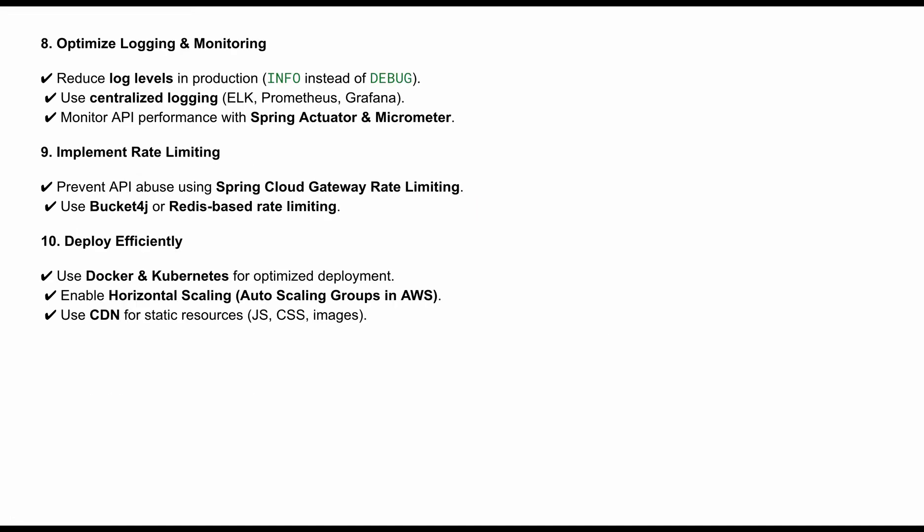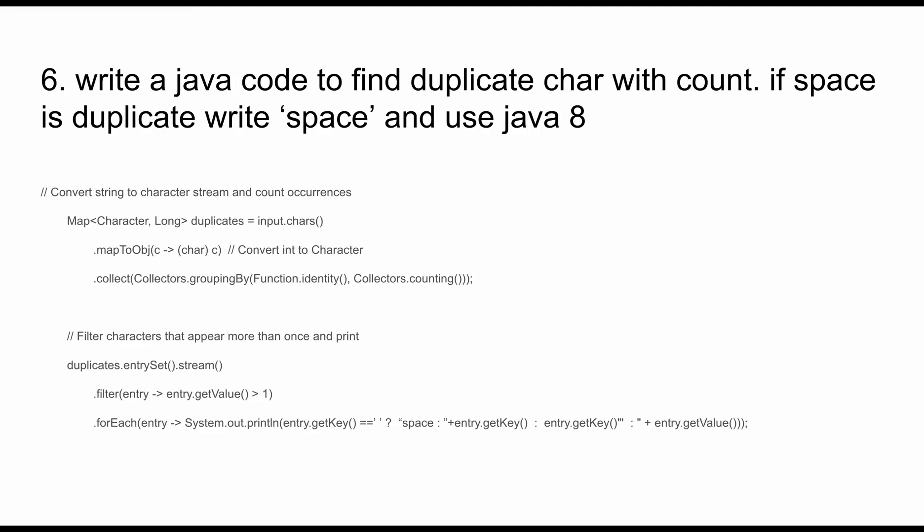To reduce memory leaks, properly close resources like DB connections and streams. Optimize logging: use INFO instead of DEBUG in production, use centralized logging with the ELK Stack, and monitor API performance with Spring Actuator. Implement rate limiting and deploy efficiently using Docker and Kubernetes for better performance.